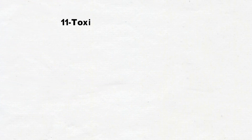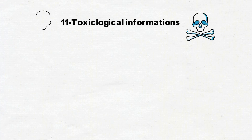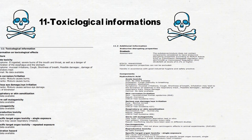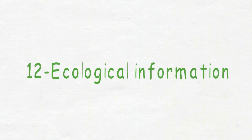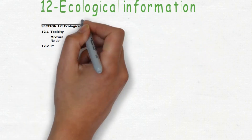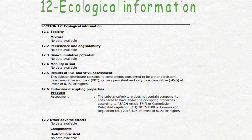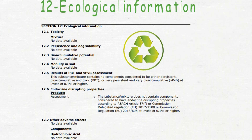Section number 11 is about Toxicological Information — general information about the toxicological effects of the chemical. Section number 12 covers Ecological Information, including the bioaccumulative potential, the effect of mobility of the chemical in soil, and some toxicity information.